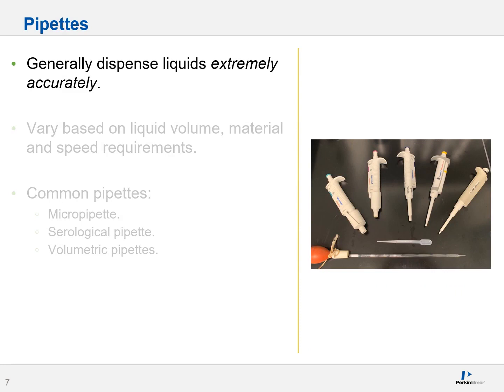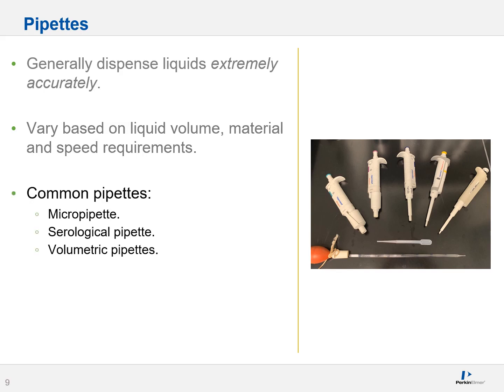Pipets are very common in a lab environment and generally extremely accurate. They tend to vary based on liquid volume, material compatibility, and speed requirements. There are many types of pipets, but perhaps the most common ones you may encounter are the micropipet — shown on the right-hand side with plungers at the back — serological pipets, volumetric pipets, and again you may encounter these in automated or manual varieties.